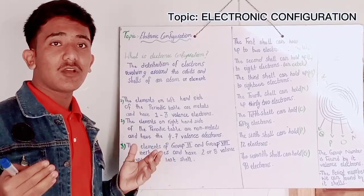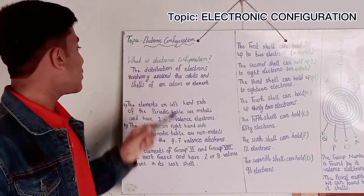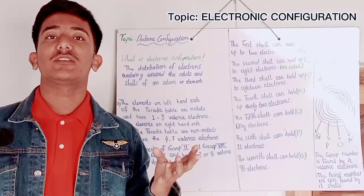So first of all, I will tell you about the definition of electronic configuration. The distribution of electrons revolving around the orbits and the shells of an atom or an element is called electronic configuration.